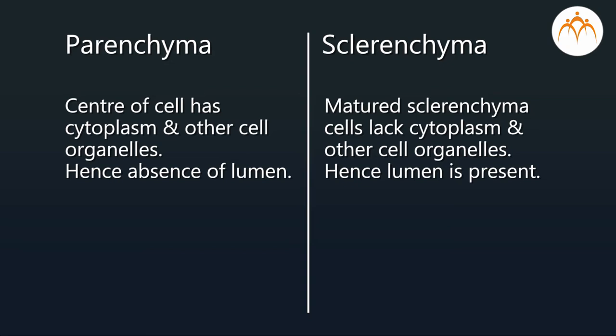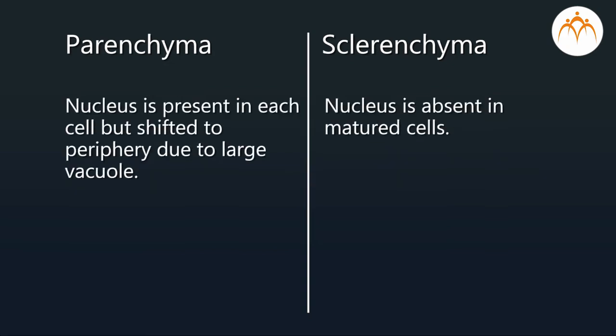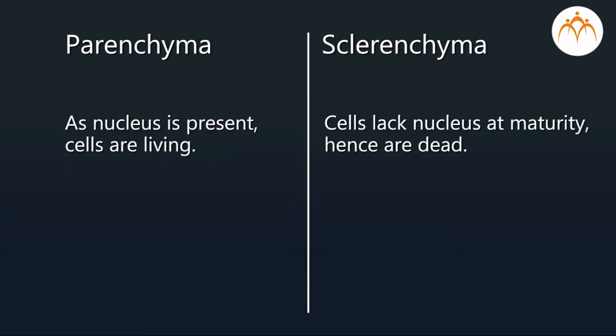In parenchyma, cytoplasm and cell organelles are present but shifted to the periphery due to a large vacuole. Nucleus is present in parenchyma cells — they are living cells. Matured sclerenchyma cells lack a nucleus at maturity, hence they are dead cells.